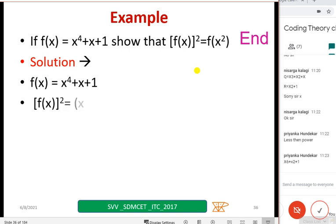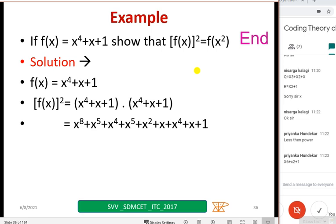X4 plus x plus 1 is given. Simply I am multiplying x into x is nothing but x square. And multiplying I got x raised to 8 plus this is what I got. And I am writing x raised to 5 plus x raised to 5 will become 0. Similarly, x raised to 4, x raised to 4 becomes 0. Only remaining is x square. X plus x will become 0 plus 1 I get.